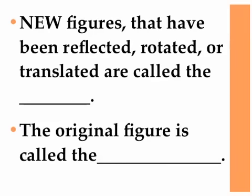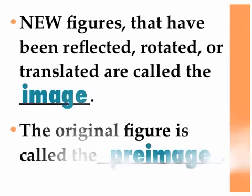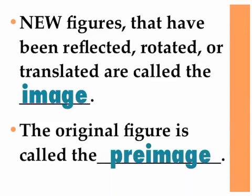New figures that have been reflected, rotated, or translated are called the image. The original figure that you start with is called the pre-image. The prefix pre means before, so the pre-image is the shape that's there before you reflect, rotate, or translate.